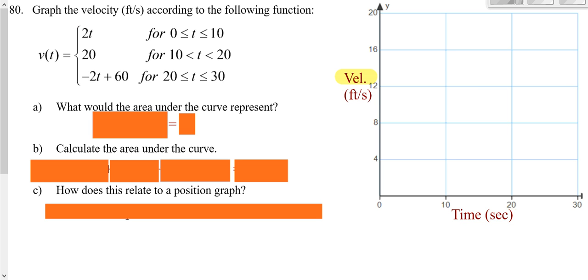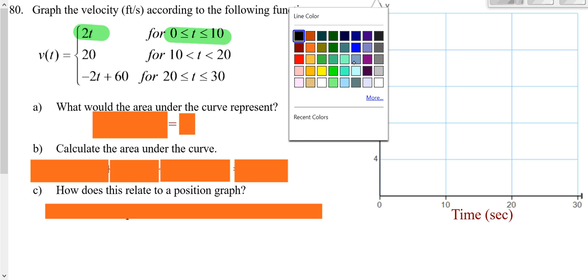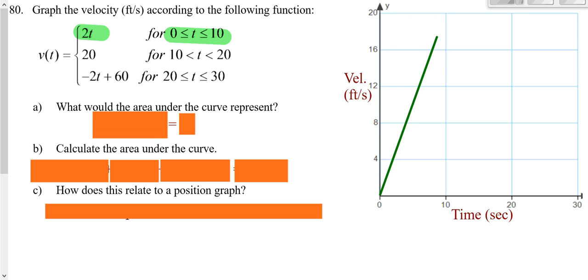We're going from 0 to 10, doubling our input. When we graph this, we start at 0 when you plug in 0, and at 10 you get 20. So it's just a diagonal line with a slope of 2.